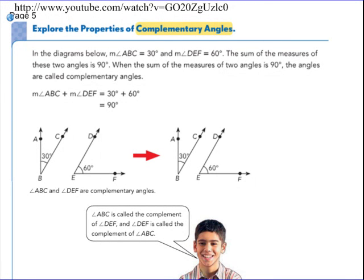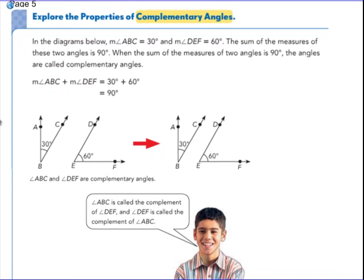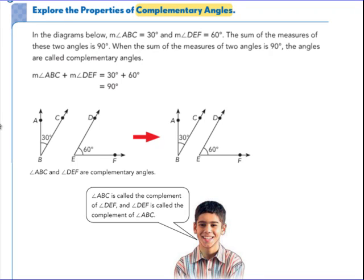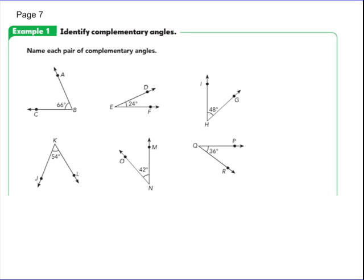So that was a great visual of complementary and supplementary. In the diagrams below, angle ABC measures 30 degrees and angle DEF measures 60 degrees. The sum of these angles is 90 degrees. When the sum of two angles — not three or four, but two — adds to 90, those angles are called complementary. Two angles that add together to make 90 degrees are called complementary angles.